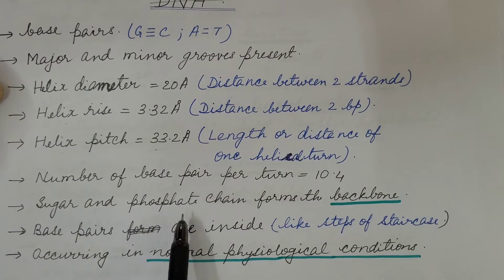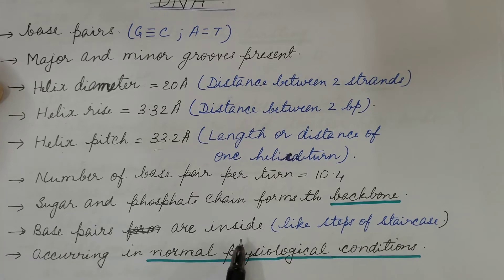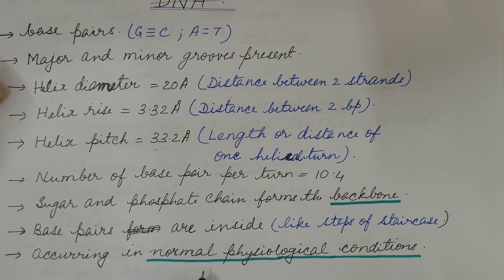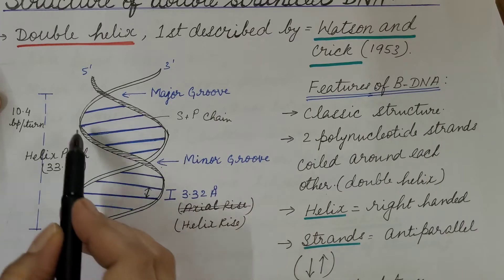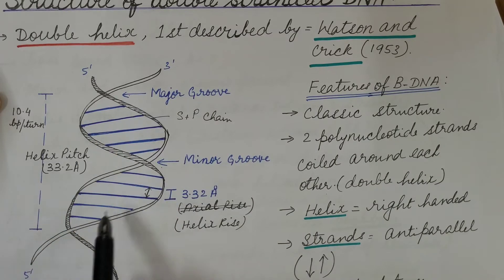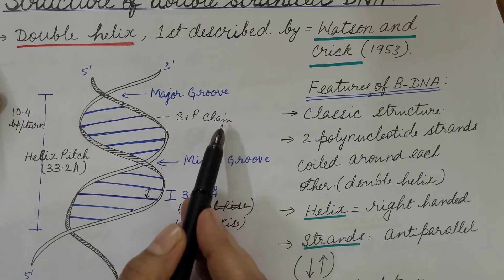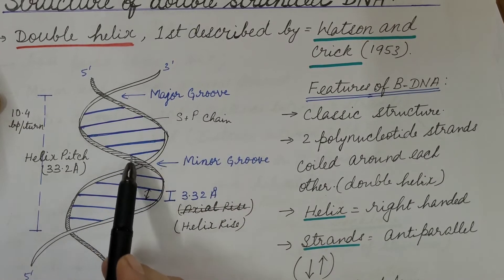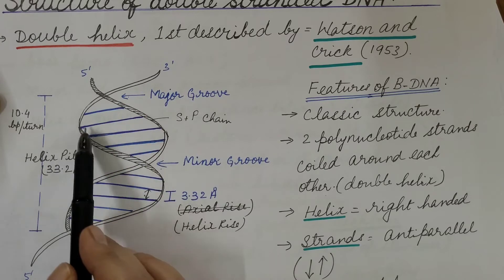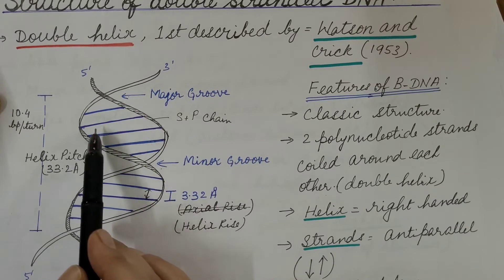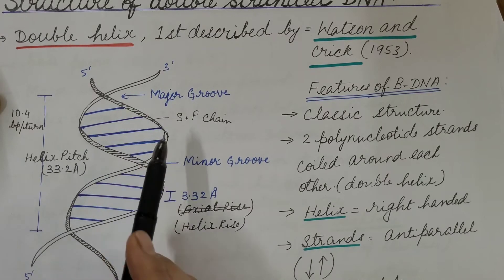The sugar and phosphate chain forms the backbone of the double helix, while the base pairs are located on the inside, like the steps of a staircase. This type of DNA, B-DNA, occurs under normal physiological conditions. The sugar-phosphate chain on the outside forms the backbone, and the nitrogenous base pairs on the inside form the steps of the staircase.